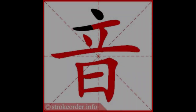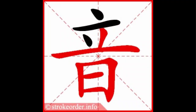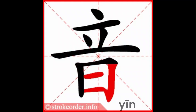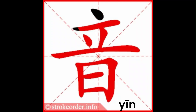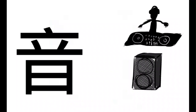In today's video, we'll teach you the Chinese character for sound and pronunciation: 音 (Yīn). This is a fun character in the Chinese language because the character Yīn looks like a DJ mixing beats at a club. This makes it easier to learn.